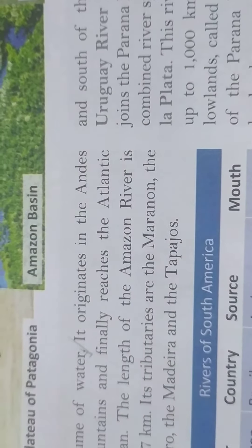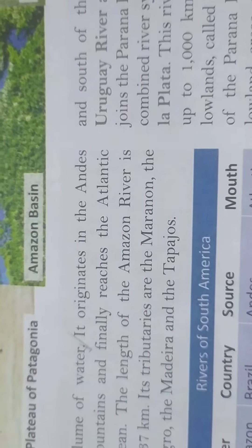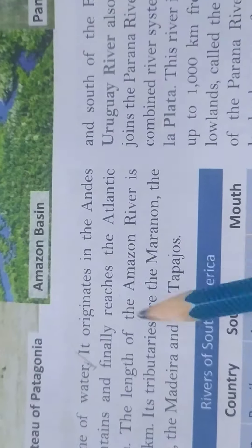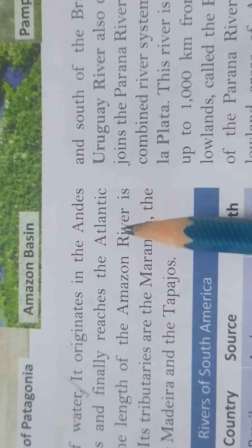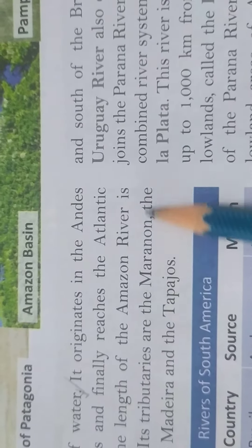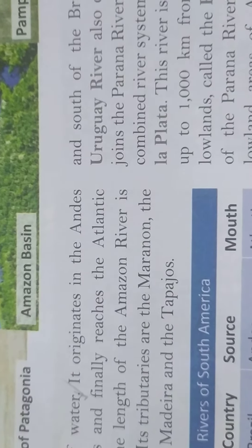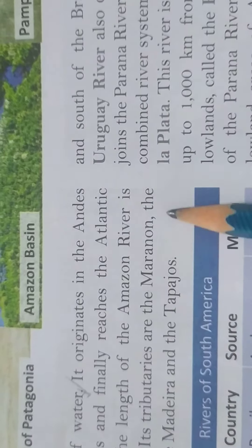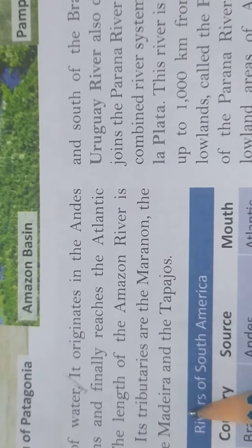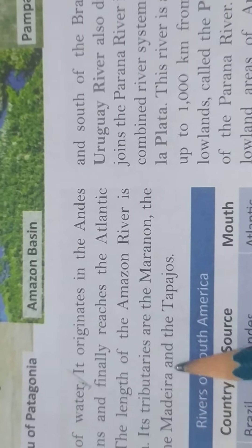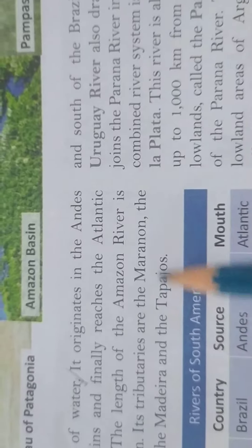It originates in the Andes mountain and finally reaches the Atlantic Ocean. Yeh jo Central Lowlands hai, yeh Andes mountain se shuru hua hai or Atlantic Ocean pa ja ke pauncha. The length of Amazon River is yeh. Yeh tributaries are the Maranon and the Negro and Madeira and Tappajos.